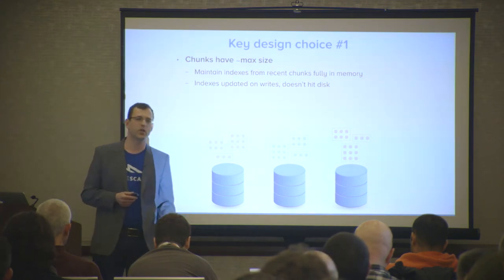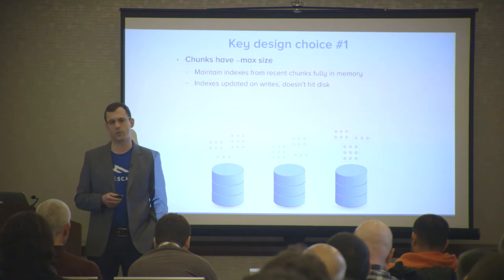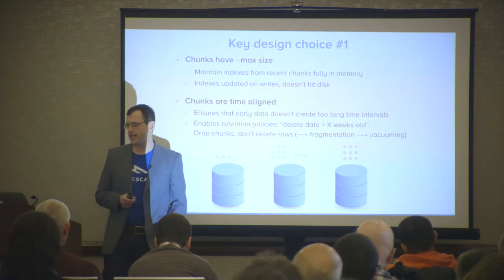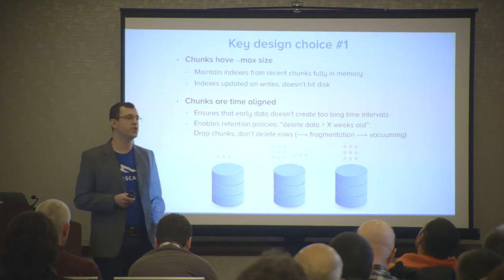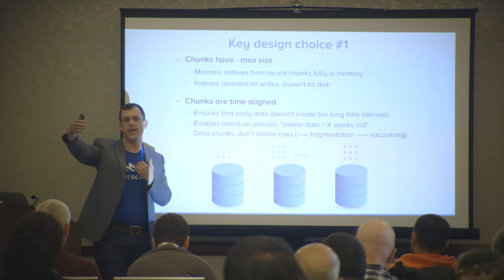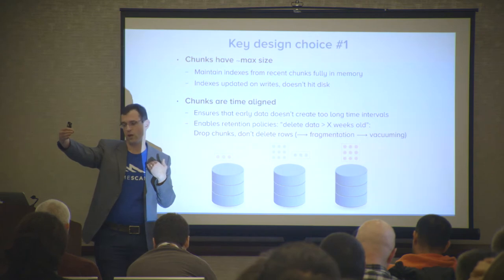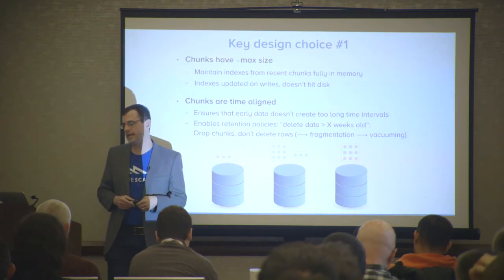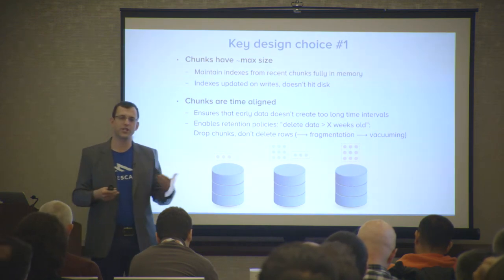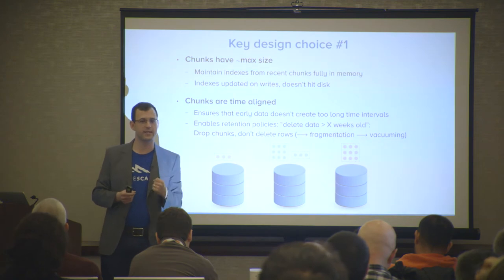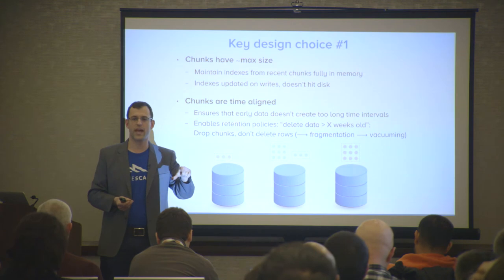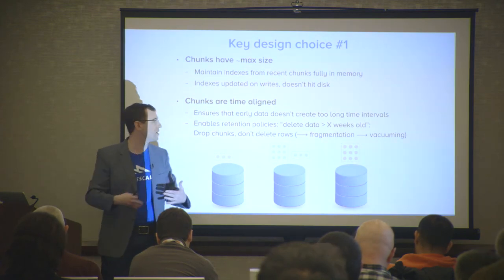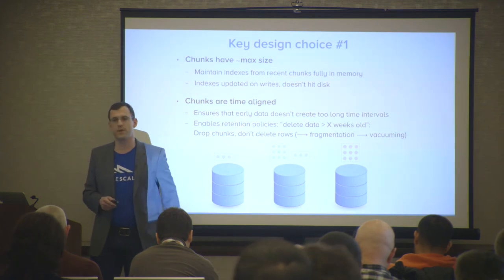We size chunks to maintain indexes for recent chunks fully in memory, so on the insert path we can update indexes just in memory without swapping to disk — giving big performance benefits. Time alignment is also important: if you only sized by data volume, early-arriving data could push out a time interval and cause chunks to become too large. Time alignment also enables nice retention policies — deleting data older than a certain time period translates to dropping entire chunks, which is dropping tables or files on disk, much more efficient than deleting in-place rows. This effectively lets us run without vacuuming.